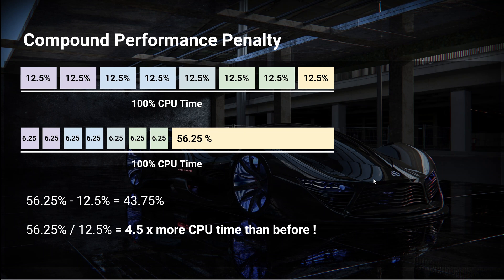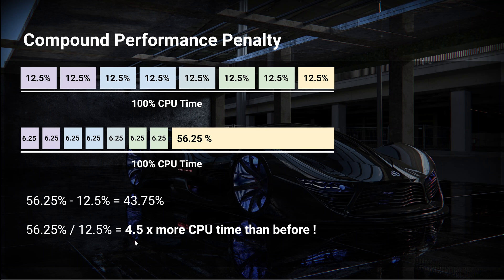Now imagine a situation where the layers below your application only take 6.25% each of the CPU time. This leaves 56.25% of the CPU time for your application. If you only look at the percentages it doesn't look like a big increase — you go from 12.5% to 56.25%, so it's like you get 43.75% more of the CPU time. But when you look at how many more times of CPU time your application now has available, you can see that dividing 56.25% by 12.5% gives you 4.5 times more CPU time.